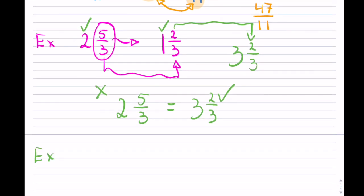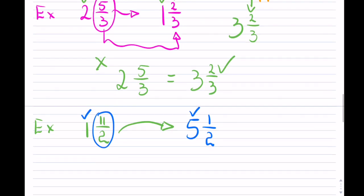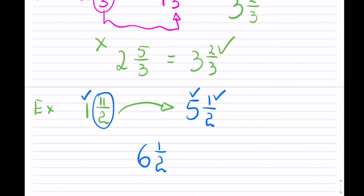Another example: say we have 1 and 11 over 2, which is not a mixed number. To change 11 over 2 to a mixed number: 2 goes into 11 five times with a remainder of 1, and the denominator stays the same. We then have 1 whole component plus 5 whole components, which is 6, and the fractional component is 1 over 2. So the mixed number is 6 and 1 half. To convert back to an improper fraction: 2 times 6 is 12, plus 1 is 13, over 2. So 6 and 1 half equals 13 over 2.